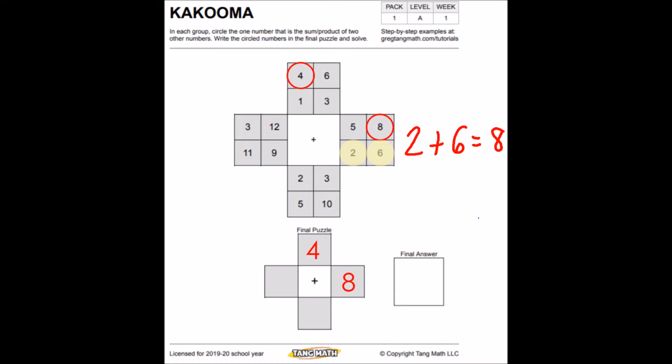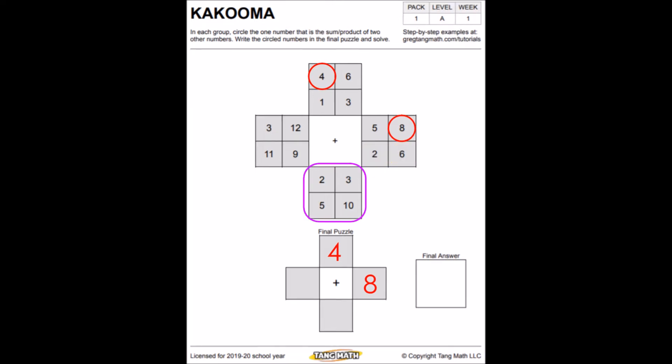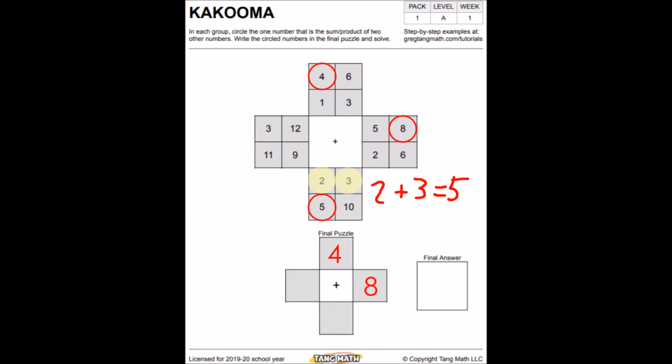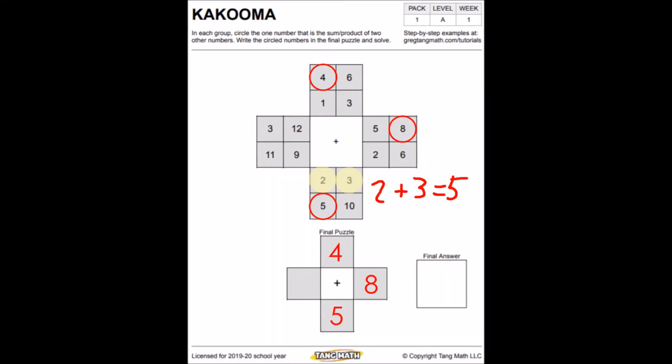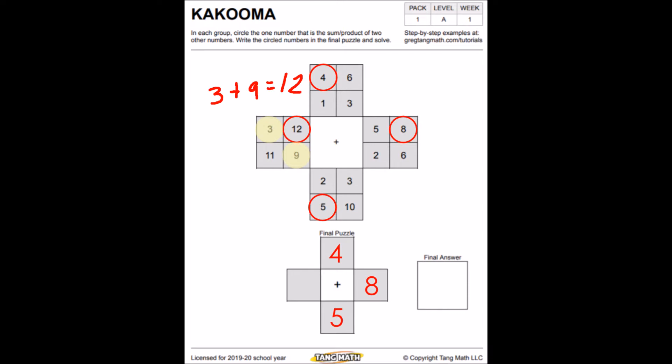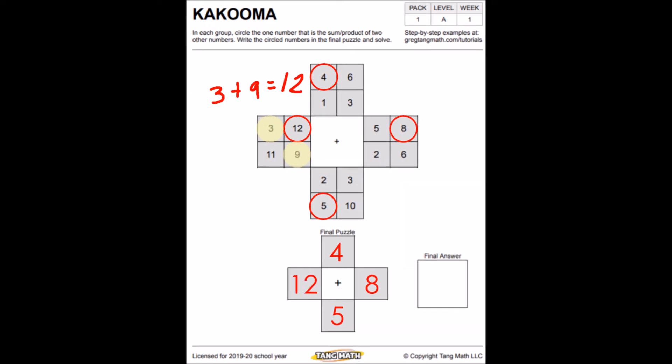Moving on to the third box, let's try our strategy again of the two smallest numbers are two and three. And two plus three equals five. Five is a number in the box. Great, we'll add that into our final puzzle. And then the last box, the two smallest numbers are three and nine. Three plus nine equals, you can pause if you want to, twelve, which is a number in the box. So twelve is going to go in the last spot of our final puzzle.